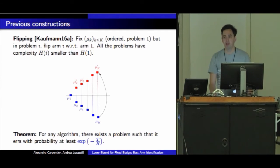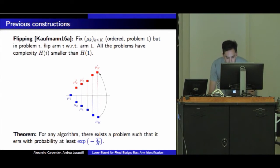As you can see, for example the last one I put an arrow, it means this is now the best arm and all other arms are unchanged. A single arm is changed. When I do that, I create problems that are easier because the best arm is further away. We can easily have that complexity H_i is smaller than H_1. What they show is that for any algorithm, there exists a problem in this class such that we err with exponential minus H rate.